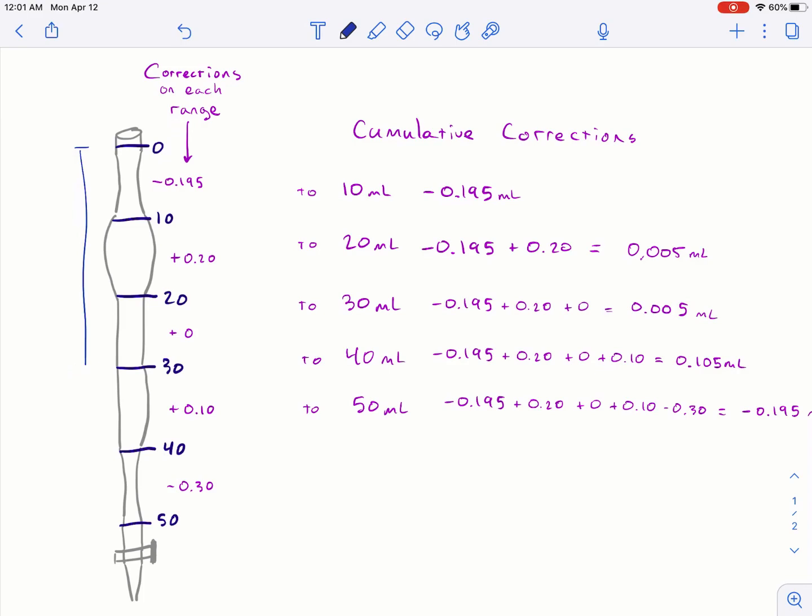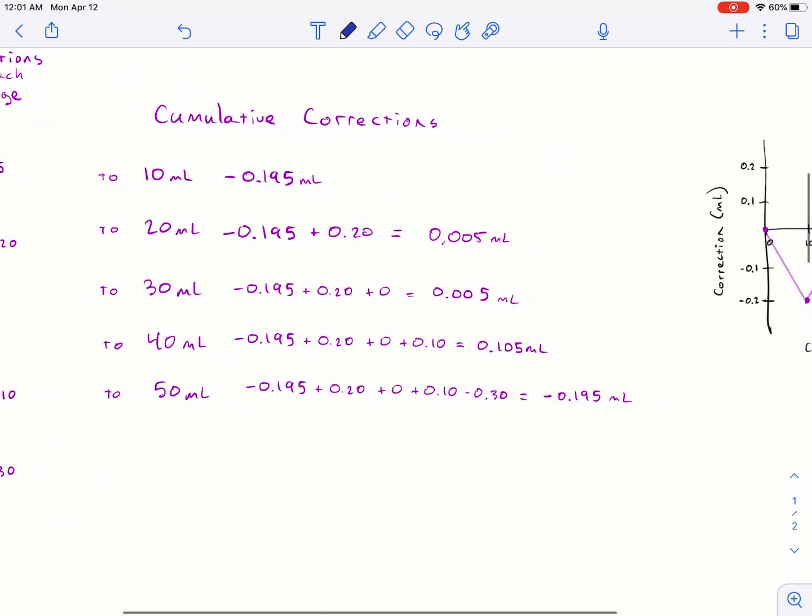Or if you did it like kind of like I did it and conceived of it in my head, you take these numbers for each range. This is 30 to 40. Here's the correction for it. And then you basically just add all your corrections up as you go down the burette. And then you calculate kind of a cumulative number. So here's me adding them all together. This is just addition. That's all that is. So I add them all together and I get these cumulative corrections.